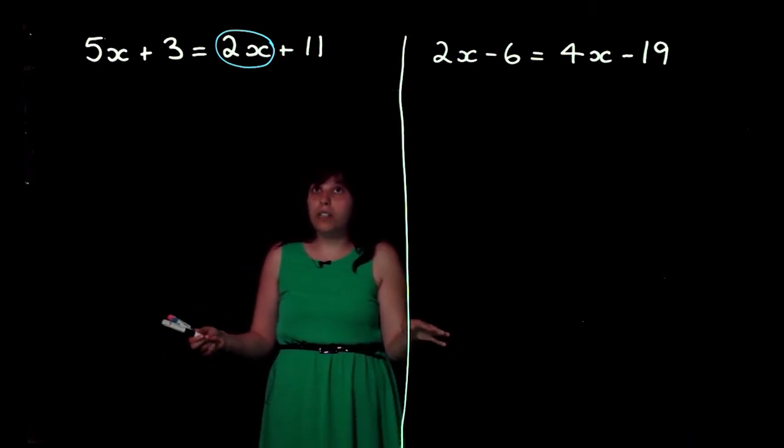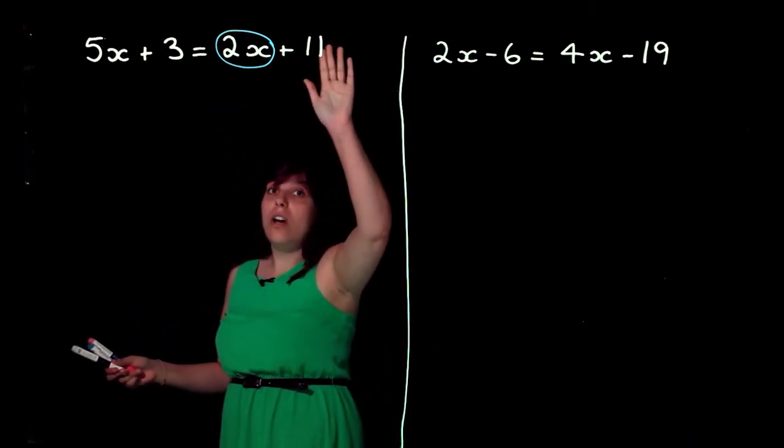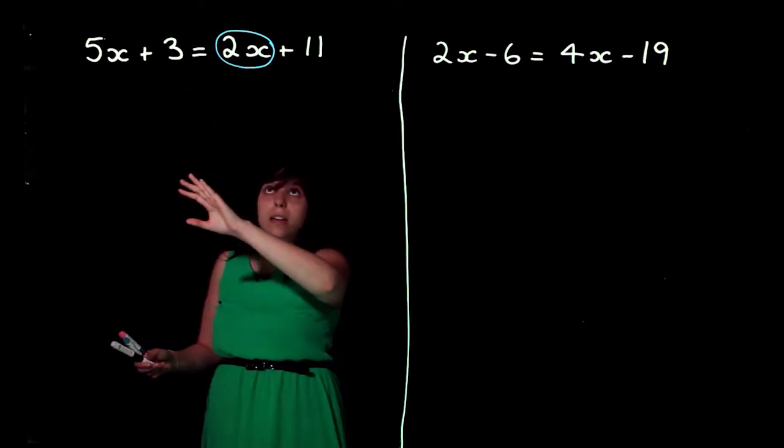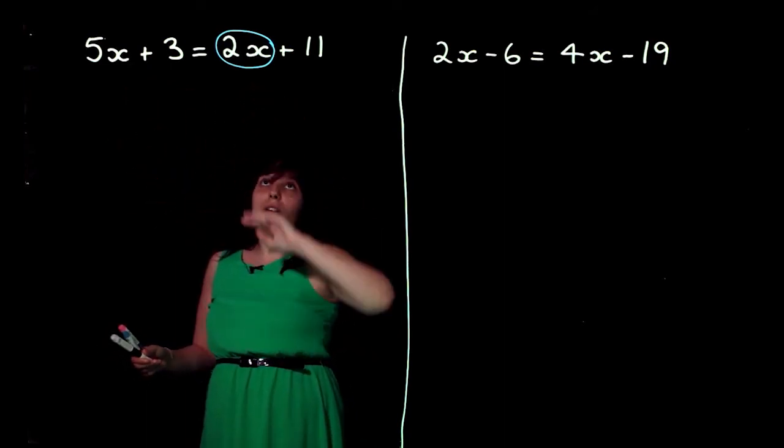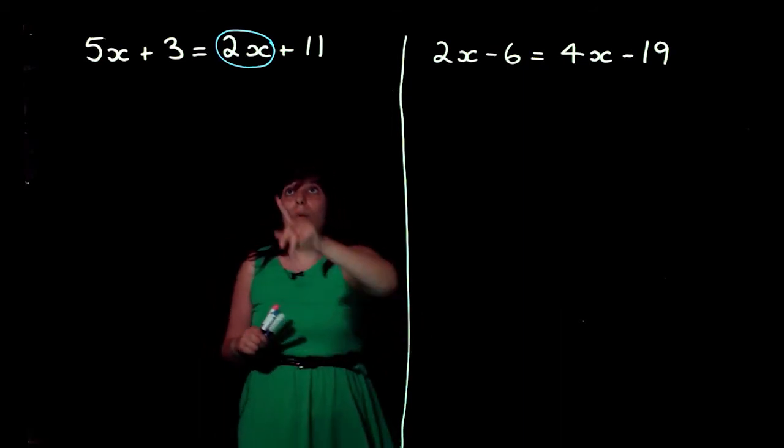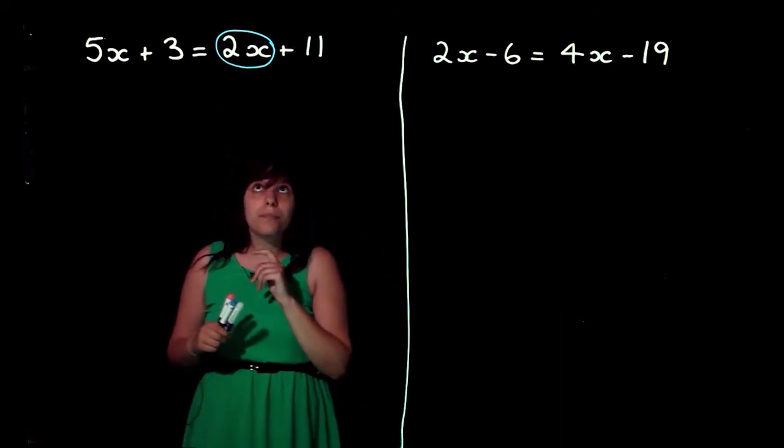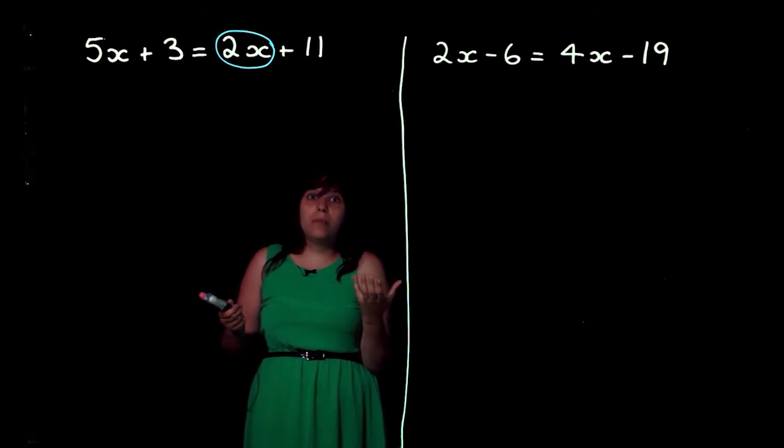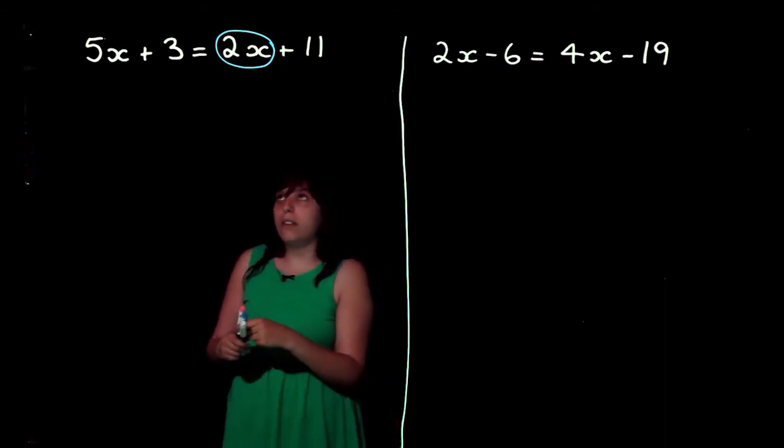So, I need to get rid of my 2x, because I don't want it on this side. I only want to put my x's on one side, so I'm going to put them over there. So, how can I get rid of 2x? Well, we know it's plus 2x, so how do we get rid of plus 2x? We subtract 2x, because that's the inverse.